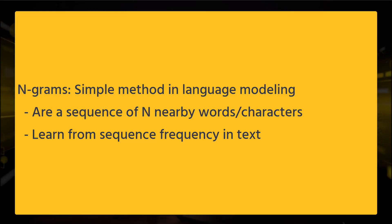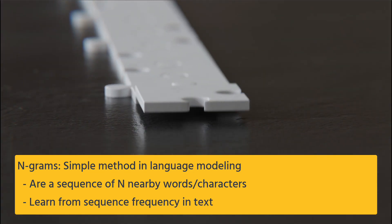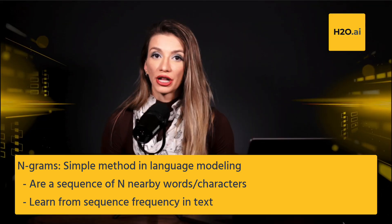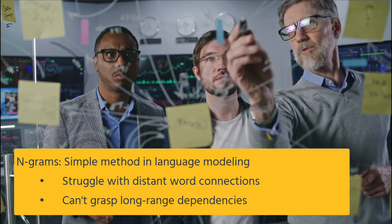N-grams are a simple method used in language modeling. They are sequences of n neighboring words or characters. To understand language patterns, the model counts how often these sequences appear in a large text collection. However, n-grams have a downside: they struggle to grasp connections between words that are far apart in a sentence. These connections, known as long-range dependencies, go beyond the immediate neighboring words.